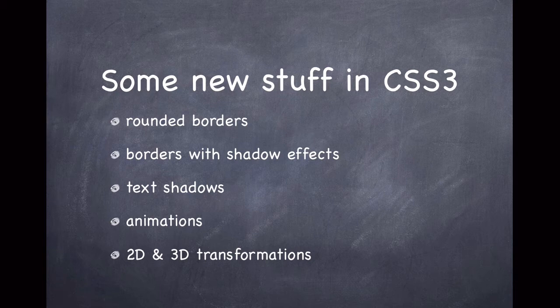You can also have 2D and 3D transformations, so you can use matrices and all that stuff to rotate your element 90 degrees, 80 degrees, 270 degrees in all X, Y, and Z dimensions. And there are 100 more features that I'll be talking about in my upcoming videos in my CSS3 series.